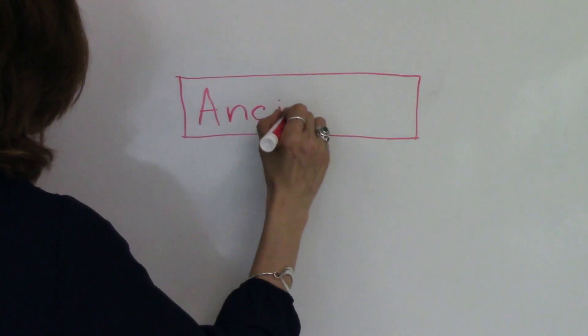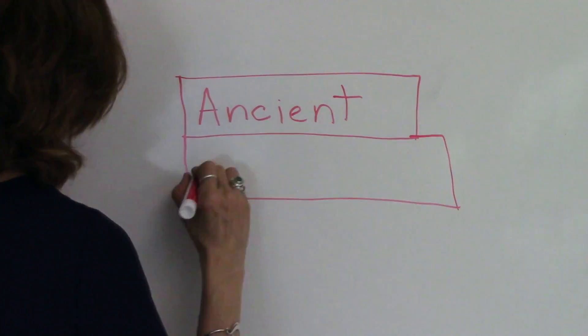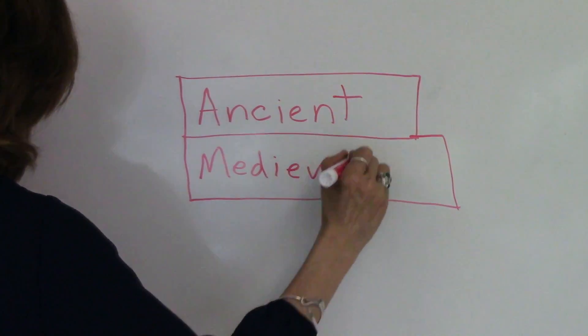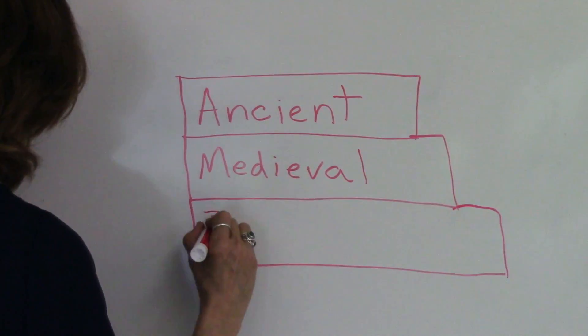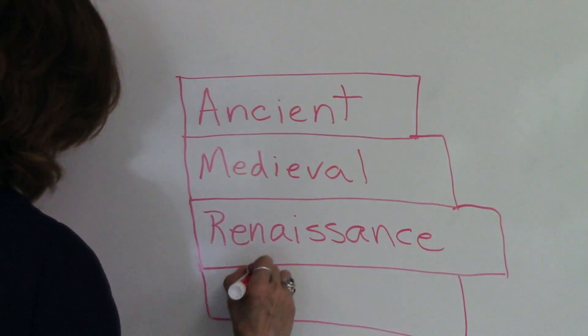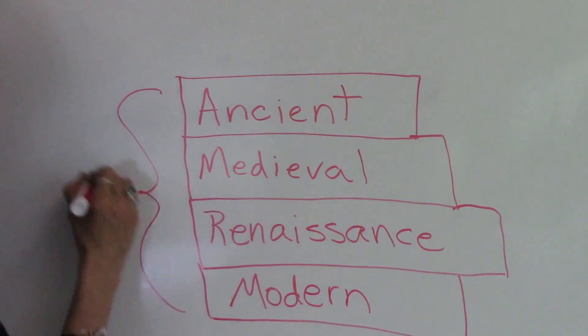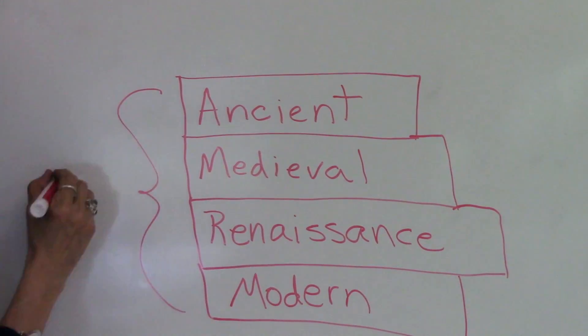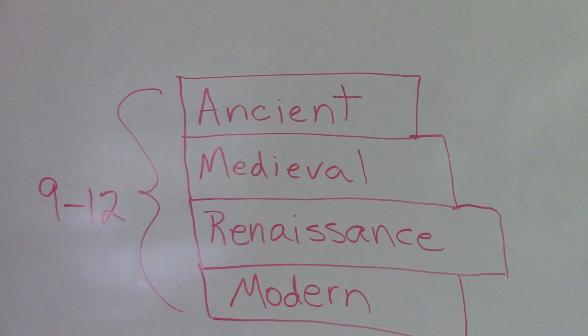At Liberty, students in first through fourth grade study ancient, medieval, renaissance, and modern history. This sequence is repeated fifth through eighth grade and then again ninth through twelfth. So by the time they graduate, our students would have gone through these historical periods three times and at three different stages in development.